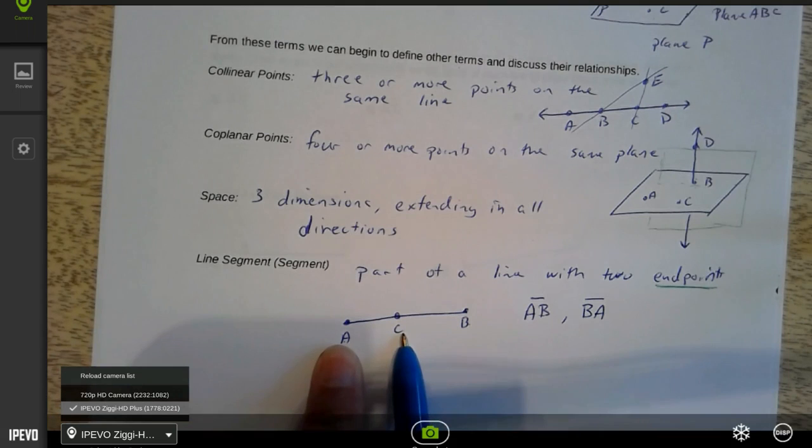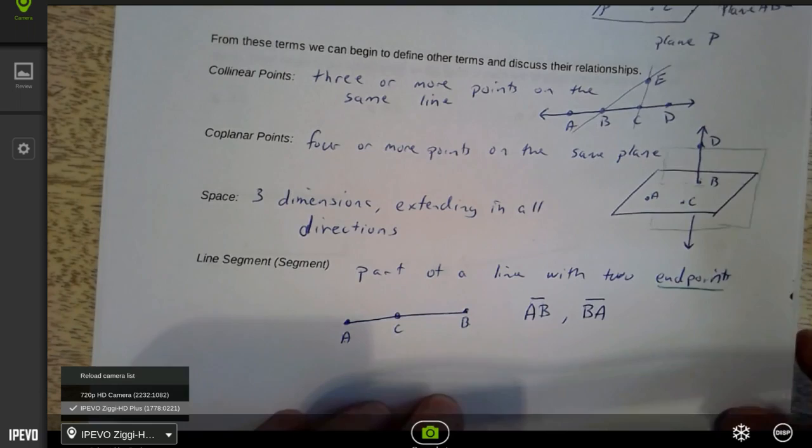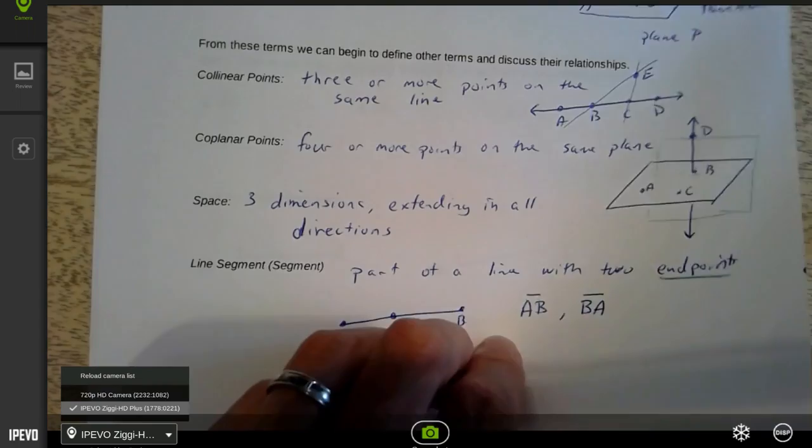If I put another point on here, C is not... I wouldn't use that to name the segment because it's not one of the endpoints. If I call it segment AC, we're only talking about this much of it. If I call it segment AB, now we're talking about that much of it. Notice the difference. I don't have arrows on the ends of my symbol here. That's telling me that I'm naming a segment and not a line. So our symbols are very, very important. And not using your symbols will cost you points on tests and quizzes. So be careful of that.